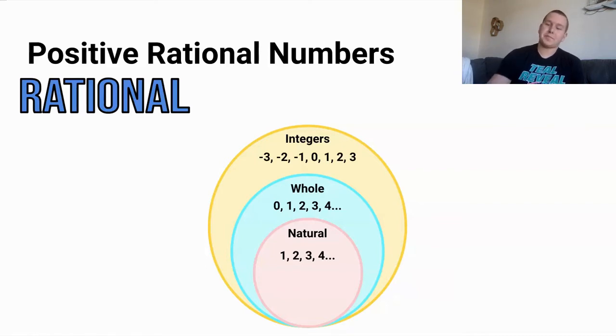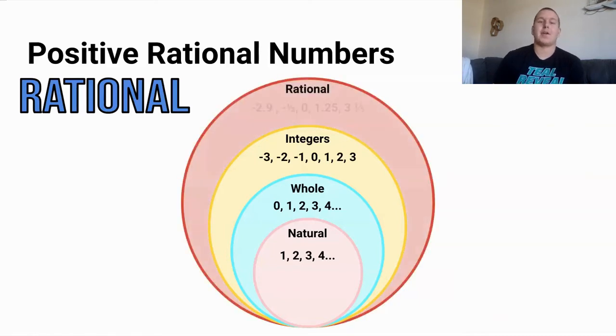We can't have decimals. Then the next part of our Venn diagram is rational numbers and rational numbers include fractions. They include decimals. They can be numbers that terminate, which means they have an ending or they're non-terminating, but they're numbers that repeat over and over again. Like one third, it goes over and over and over again. So integers are considered rational numbers. Whole numbers are considered rational numbers. Natural numbers are considered rational numbers.